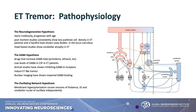Thinking about essential tremor pathophysiology — everybody thinks of it as a cerebellar condition, and it is, but we're appreciating this might be more on the neurodegenerative spectrum than originally thought. Patients with longstanding essential tremor have cognitive problems and balance issues. Pathologically, Lewy bodies have been shown to be part of the cerebellar atrophy in essential tremor. There's also the GABA hypothesis, where there are low GABA levels in CSF. But what it really focuses on is the oscillatory network hypothesis — things supposed to work in sync are no longer in sync, and because of that it manifests as a tremor.